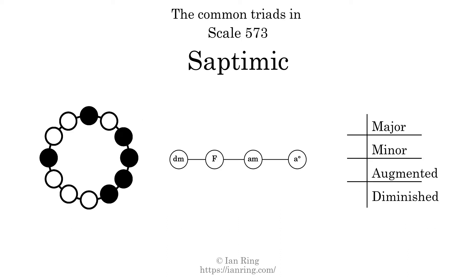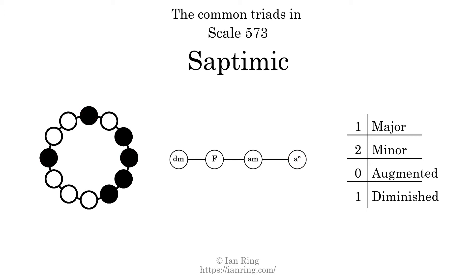Here are the common triads present in this scale. The diagram in the center is a graph of parsimonious voice leading between triads. There is one major triad. There are two minor triads. There are no augmented triads. There is one diminished triad. Here is a Hamiltonian path of parsimonious voice leading that uses all the triads.